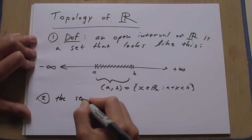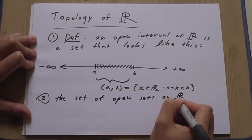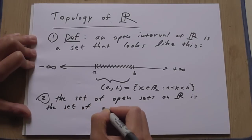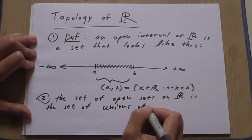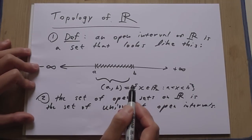Okay. Two. The set of open sets on R is the set of unions of open intervals. So basically, it's sets that look like this.